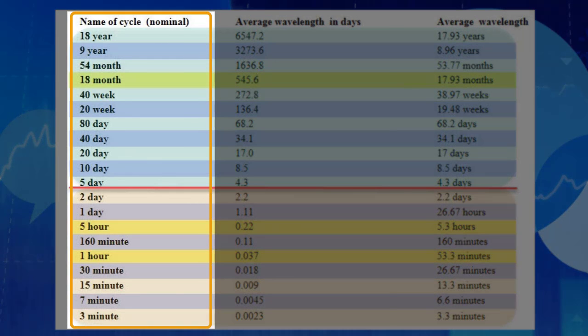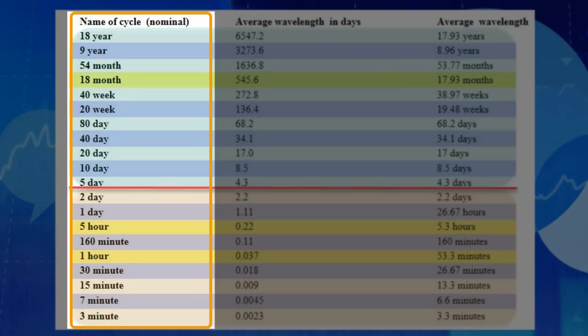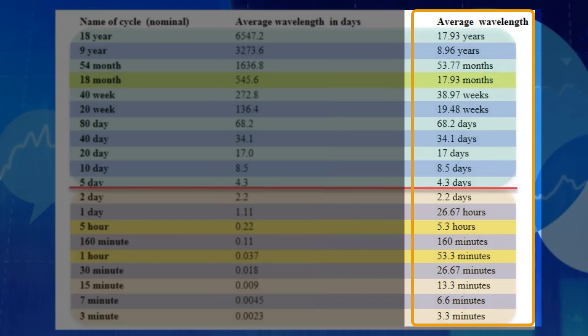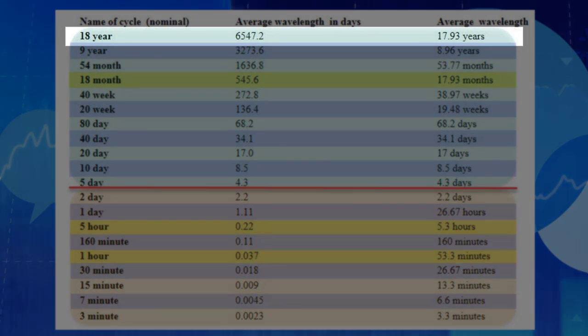You will see there are three columns to this nominal model. The first column is simply the name of the cycle. The second column is the average wavelength of that cycle measured in days. And the third column is the average wavelength in a time frame relative to the wavelength of the cycle. You will see that the longest cycle that Hurst identified was an 18-year cycle with an average wavelength of 17.93 years.